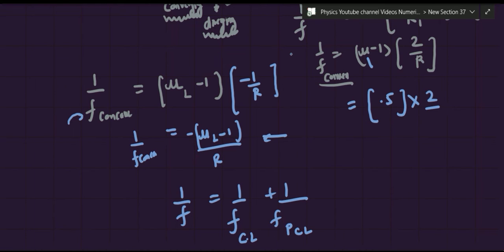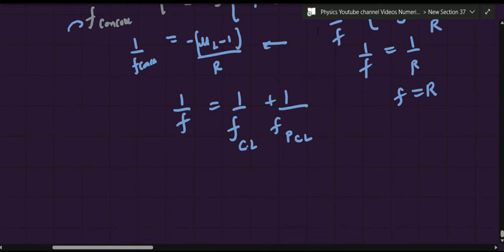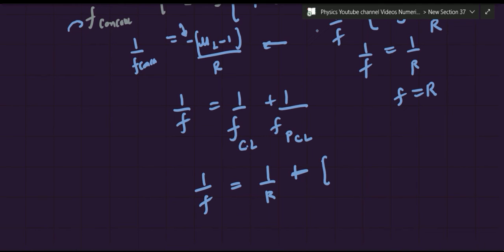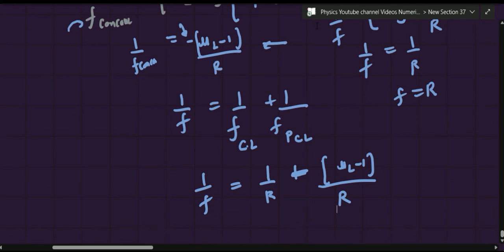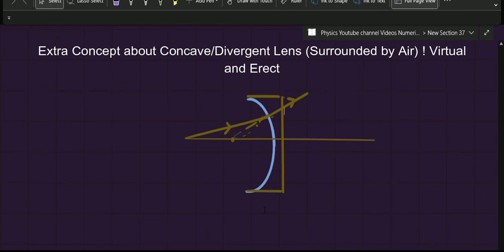With μ = 1.5 and 1/f_convex = 1/R, the combined focal length simplifies to 1/f = 1/R − (μ_liquid − 1)/R. This is the combined focal length of the two-lens system. So far, all we've done is account for refraction.